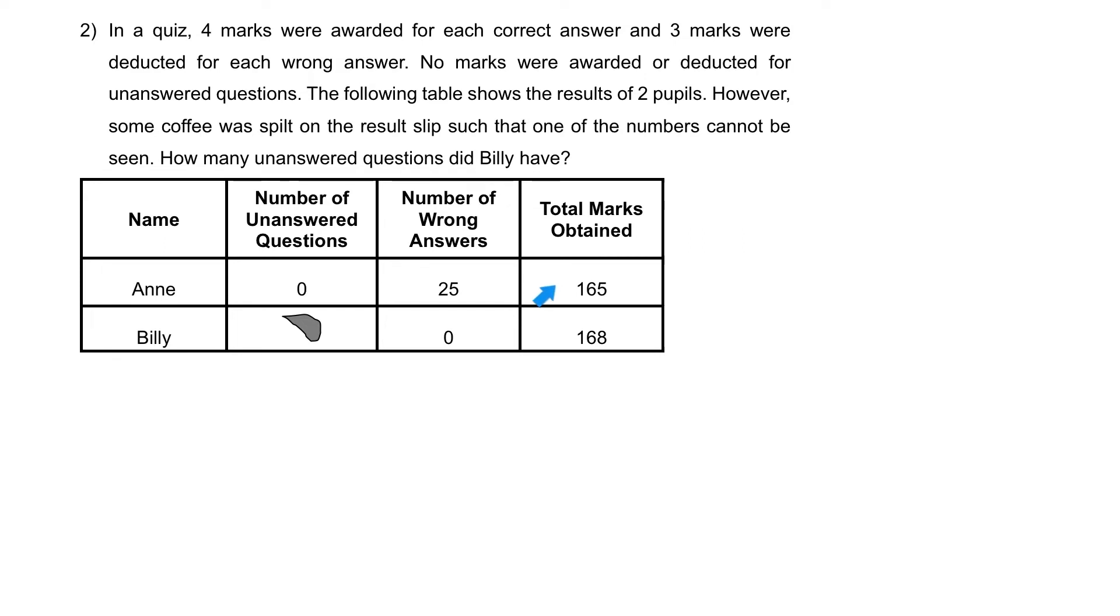Let's think about what would happen if, instead of having 25 wrong answers, she didn't get these 25 questions wrong. So what would be her total marks then? Our first step is total number of marks if Anne answered all questions correctly. So we start with 165.